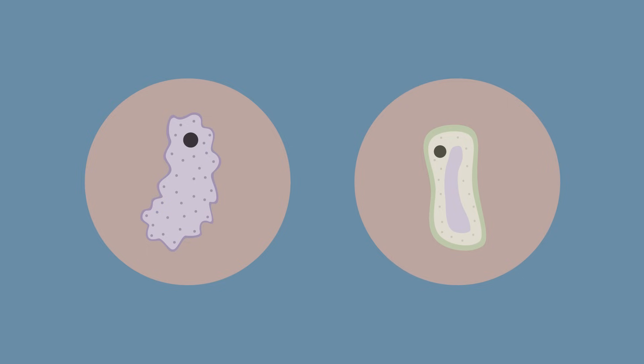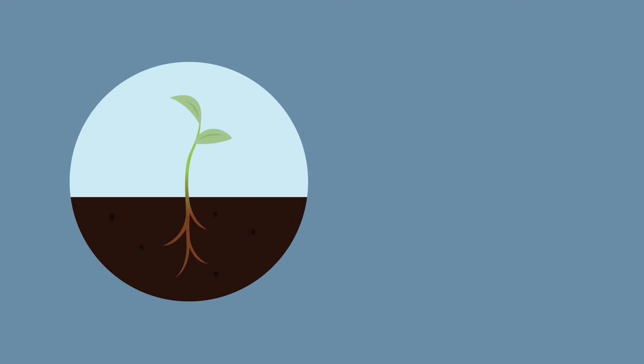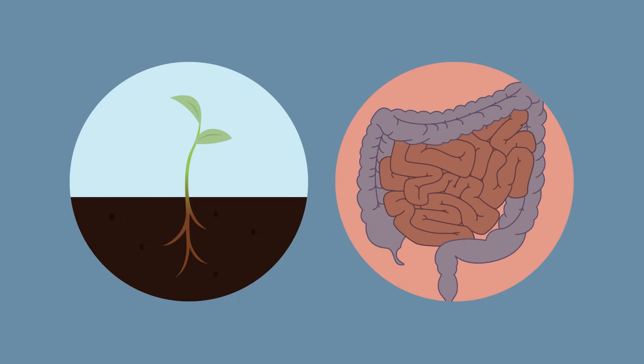And if osmosis causes lots of movement of water into the cell, plant cells swell and become turgid. They have a strong cell wall which prevents them from bursting, whereas animal cells don't have a cell wall and so they burst.